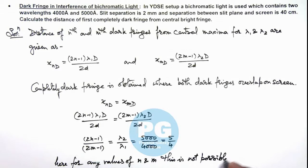That is the result of this problem: there will be no position on the screen where a completely dark fringe is obtained. That is the final result.